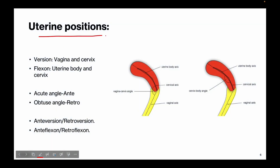In the next few slides we will learn different positions of the uterus and their identification in ultrasound. The position of the uterus is variable and changes with bladder and rectal distension. Two terms are commonly used to describe the relative position of the uterine body, cervix, and vagina: the term 'version' is used to describe the orientation of the cervix and vagina, while 'flexion' describes the relative position of the uterine body with the cervix.